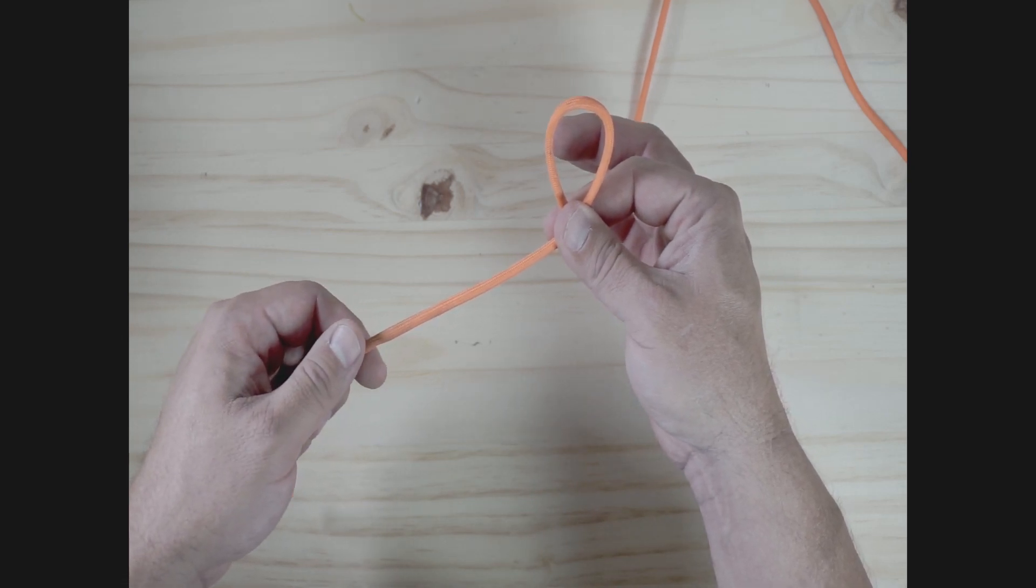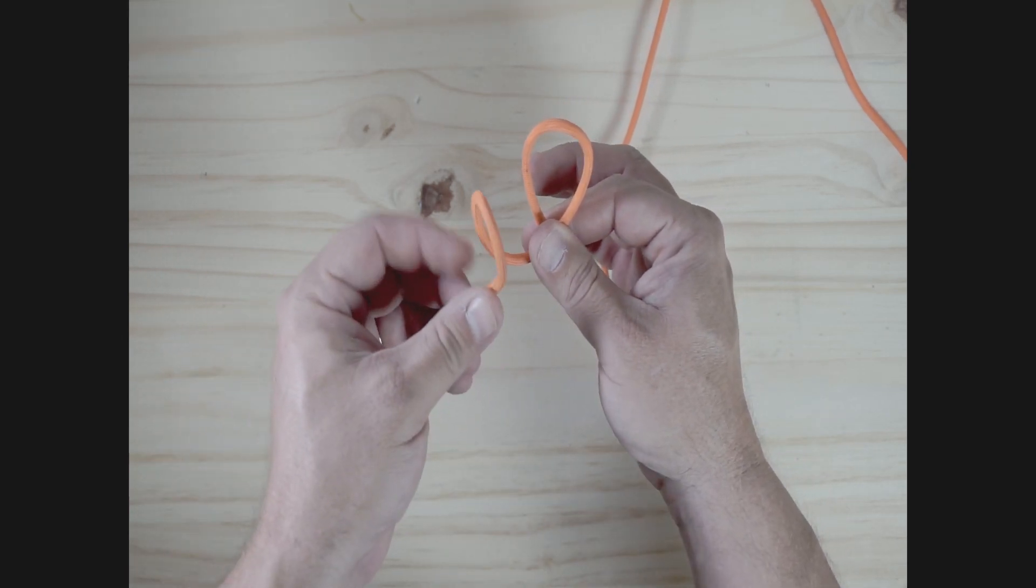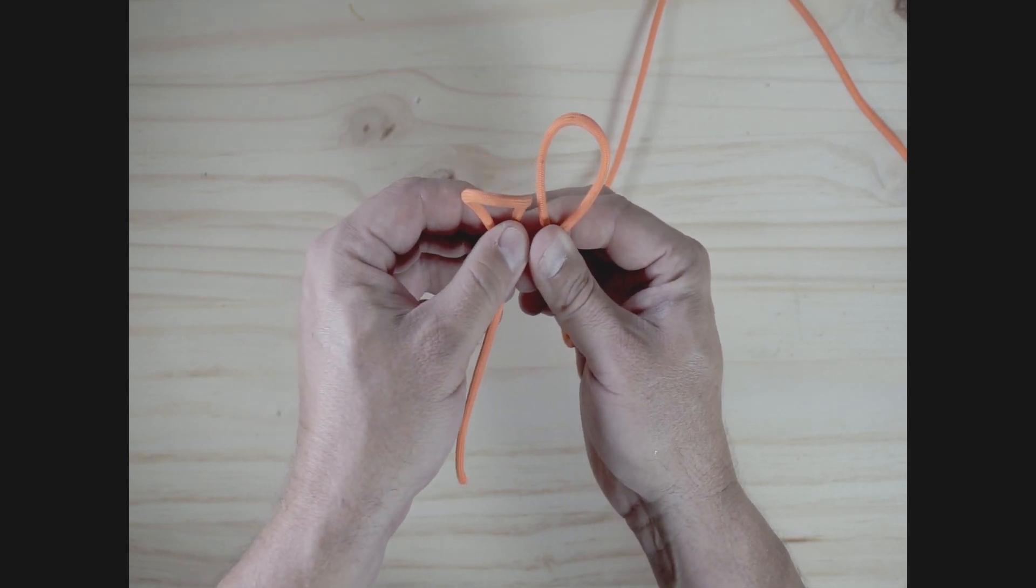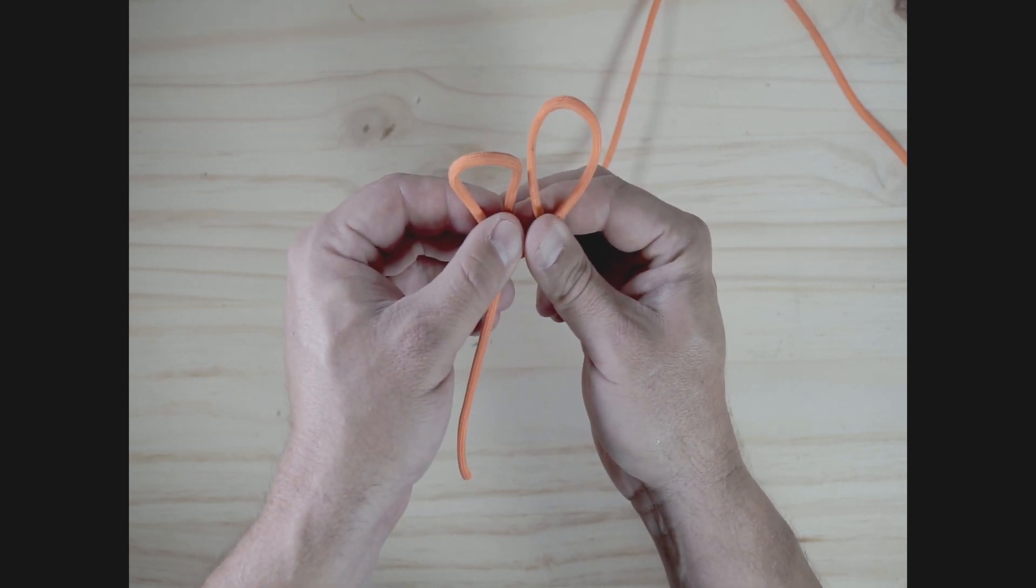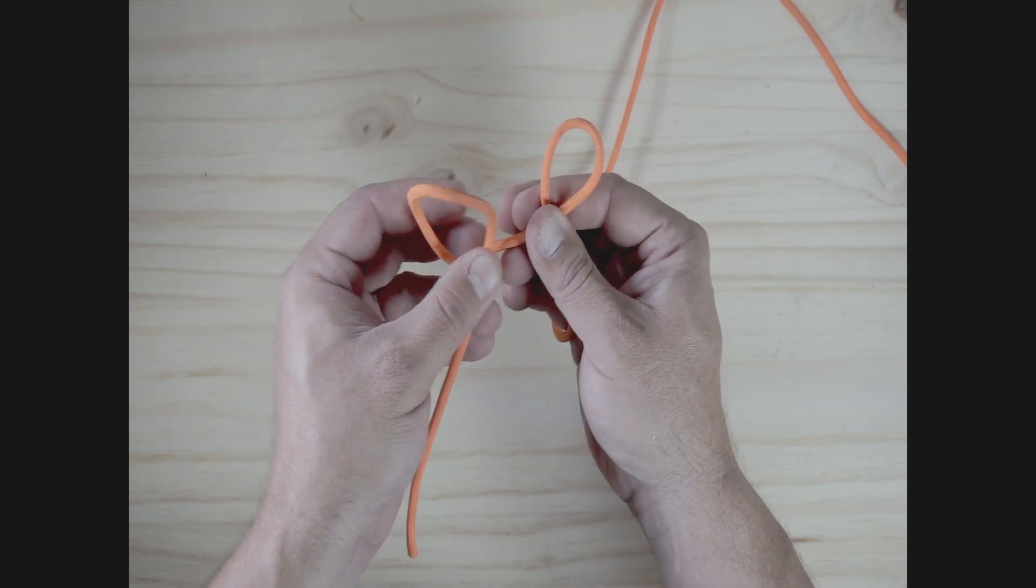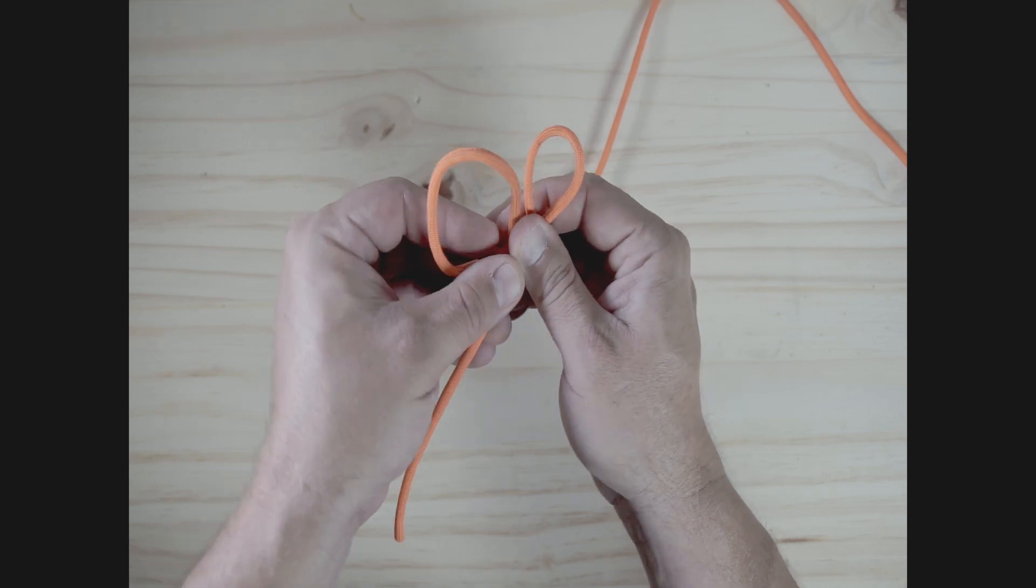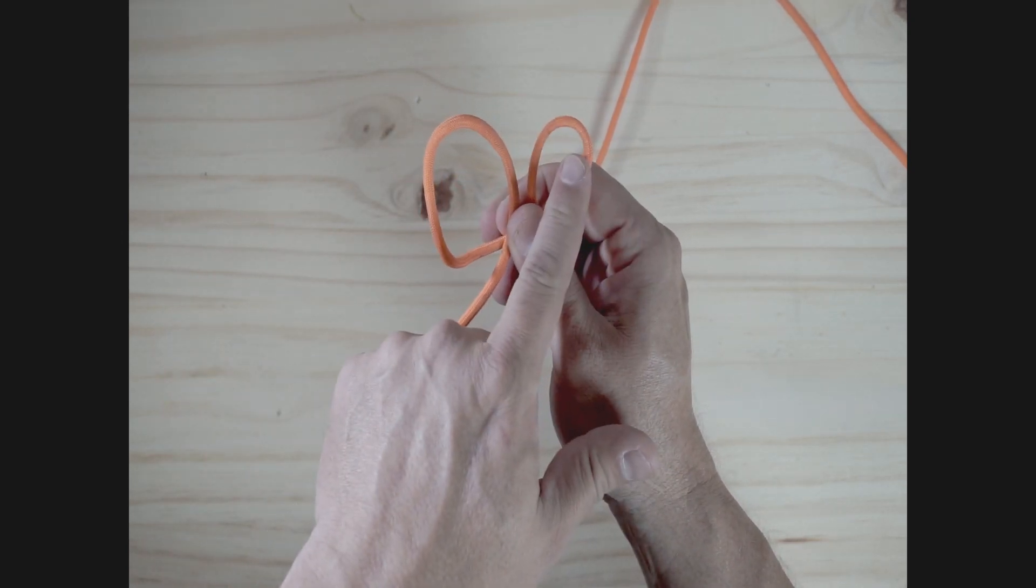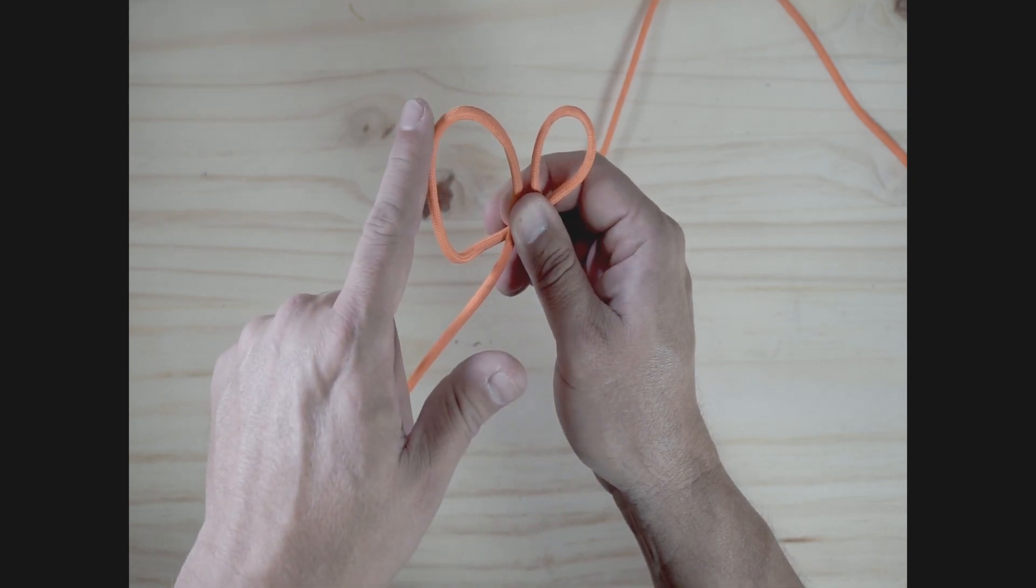I'm going to make another same exact loop. Alright, so again, boom and boom. Alright, now at this point, what I like to do is that first loop I made, I'm going to pull on my tag end, my left hand and make it a little bit smaller and push this back and make this a little bit bigger. Because the next thing we're going to do is we're going to take this back loop and run it through my front loop.